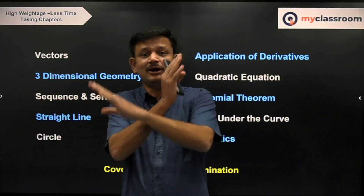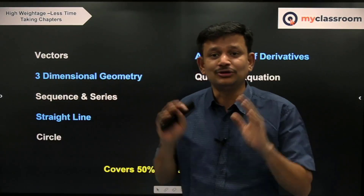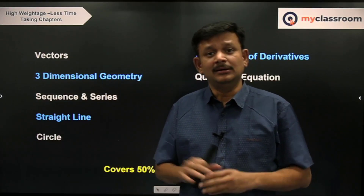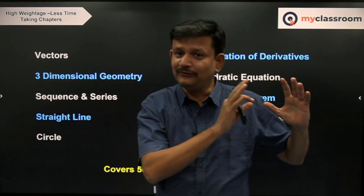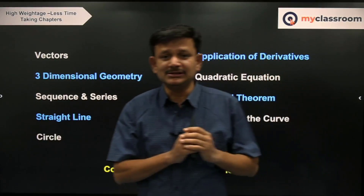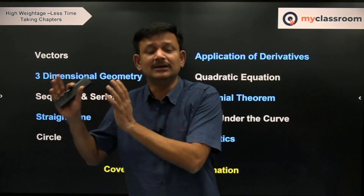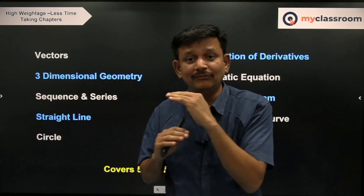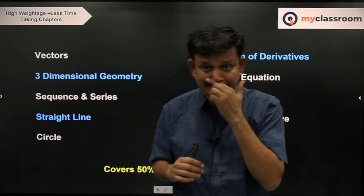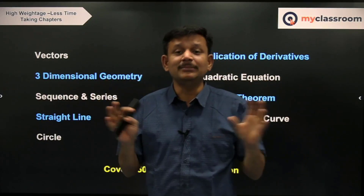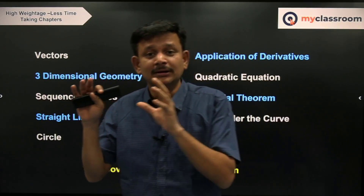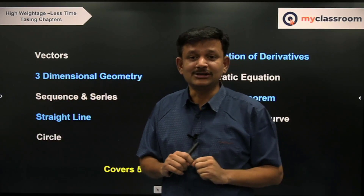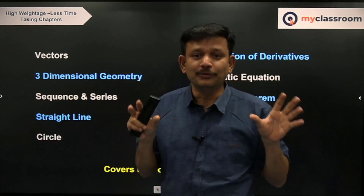If you classify all the chapters roughly, there will be about 25 chapters in mathematics. Some are very difficult and take high time to prepare, some are low time-taking, some have high weightage and some have low weightage. Based on these two parameters — weightage and time taken for preparation — you can classify them into four groups.